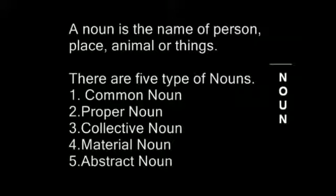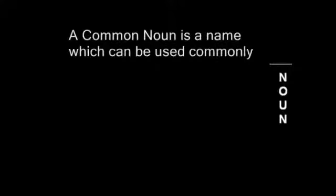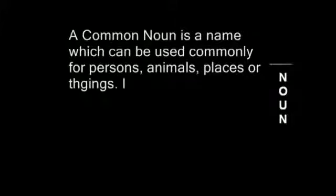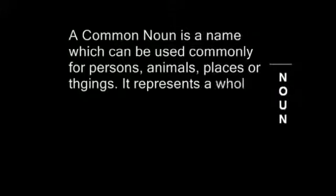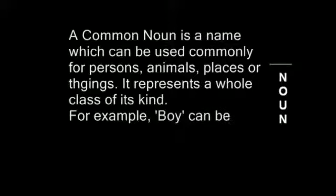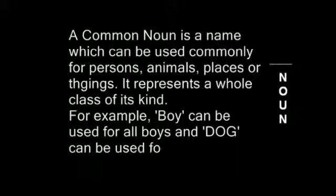So there are 5 kinds of noun. Now let's read what is a common noun. A common noun is a name which can be used commonly for persons, animals, places or things. It represents a whole class of its kind. For example, 'boy' can be used for all boys and 'dog' can be used for all dogs. We can also say girl, home and class.